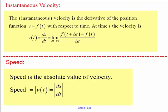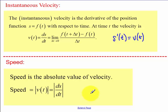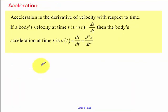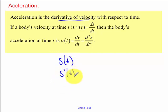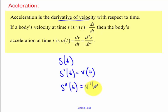For velocity applications: the instantaneous velocity is the derivative of position, and speed is the absolute value of velocity. Acceleration is the derivative of velocity. Think of it as a ranking — position, then the derivative of position gives velocity, and the second derivative of position (which is the first derivative of velocity) gives acceleration.